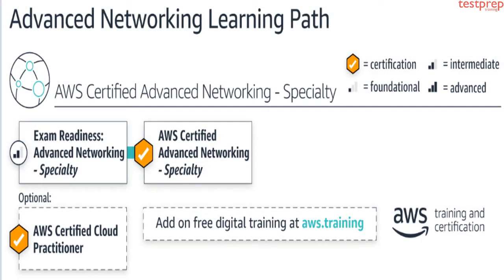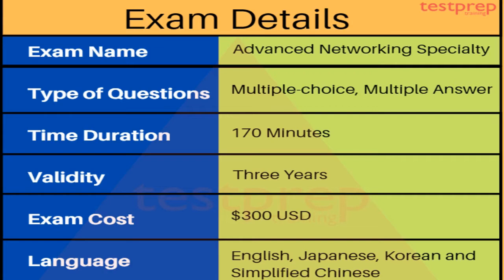Now we will talk about the learning path. AWS provides an advanced networking specialty learning path designed for individuals who want to validate their advanced networking technical skills and experience in designing and implementing AWS and hybrid IT network architectures at scale. Candidates will learn how the network impacts infrastructure performance, security, availability, and integration with AWS services. It is recommended that individuals should have technical AWS cloud experience related to advanced networking before beginning this learning path.